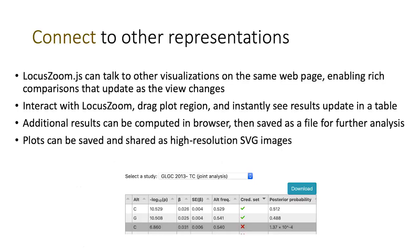One last piece of new functionality we've been working on is the ability for LocusZoom in the browser to actually update other elements of the page as you're viewing it. You could be panning around in LocusZoom and have a table on the page that updates with what you're seeing — for example, a table of p-values, effect sizes, and credible set posterior probabilities. As you move around, the table will automatically update, and then you can download those statistics to your computer. We also support downloading SVG images by hovering over the plot and clicking the download button.